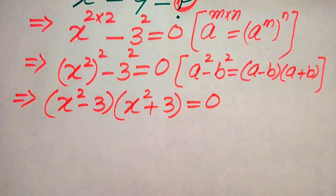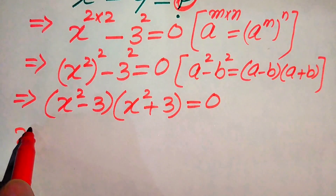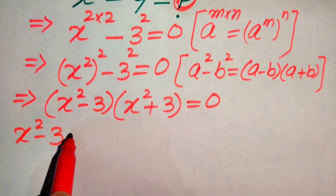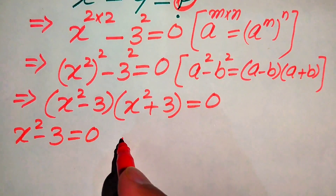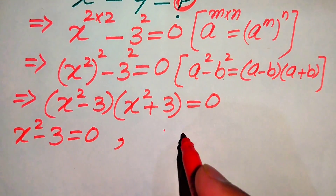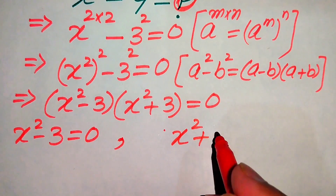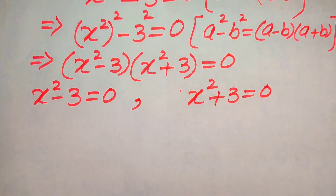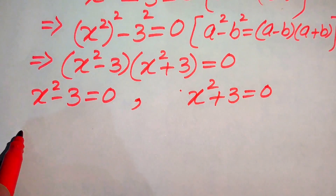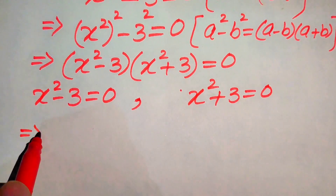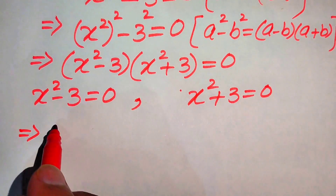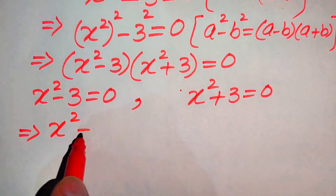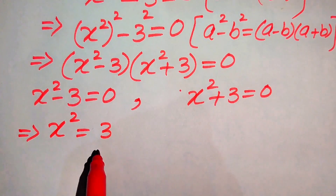Now we divide this equation into two cases. The first case is x squared minus 3 equals to 0, and the second case is x squared plus 3 equals to 0. We find the values of x from both cases. In the first case, we move minus 3 to the right hand side and we get x squared equals to 3.